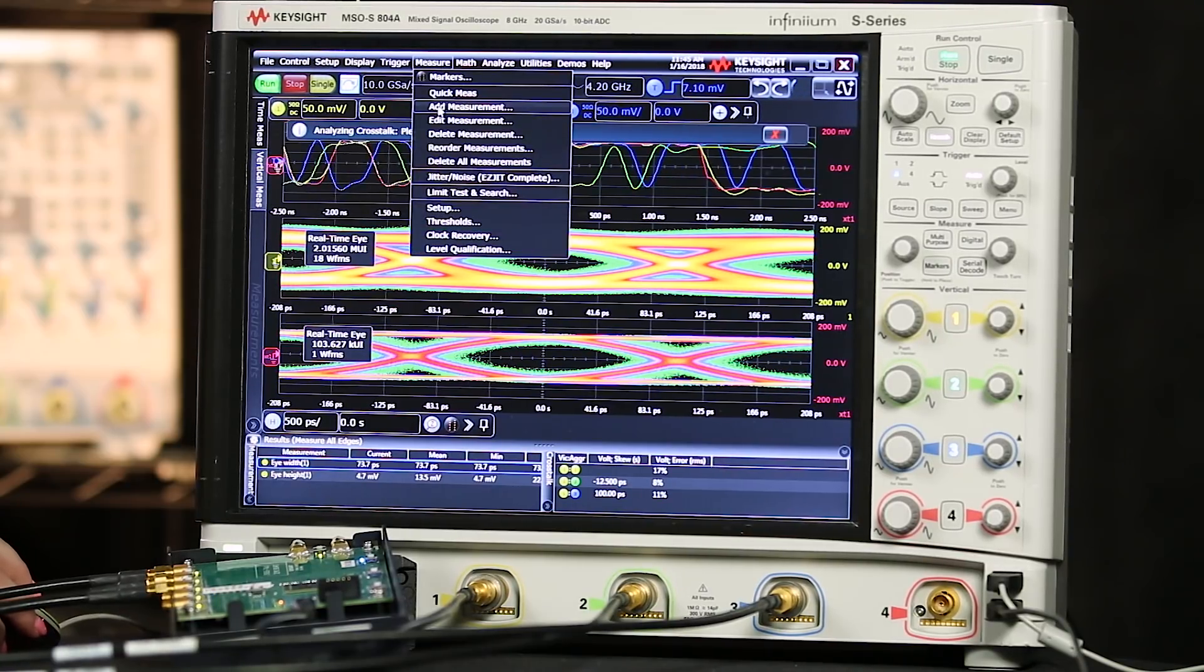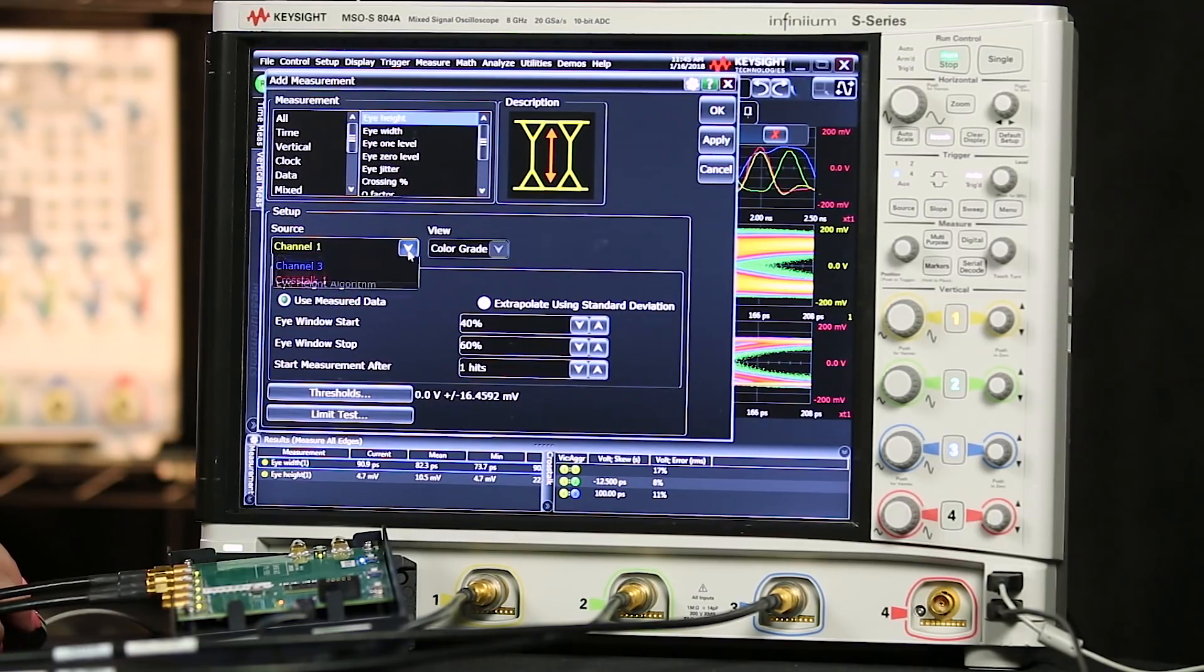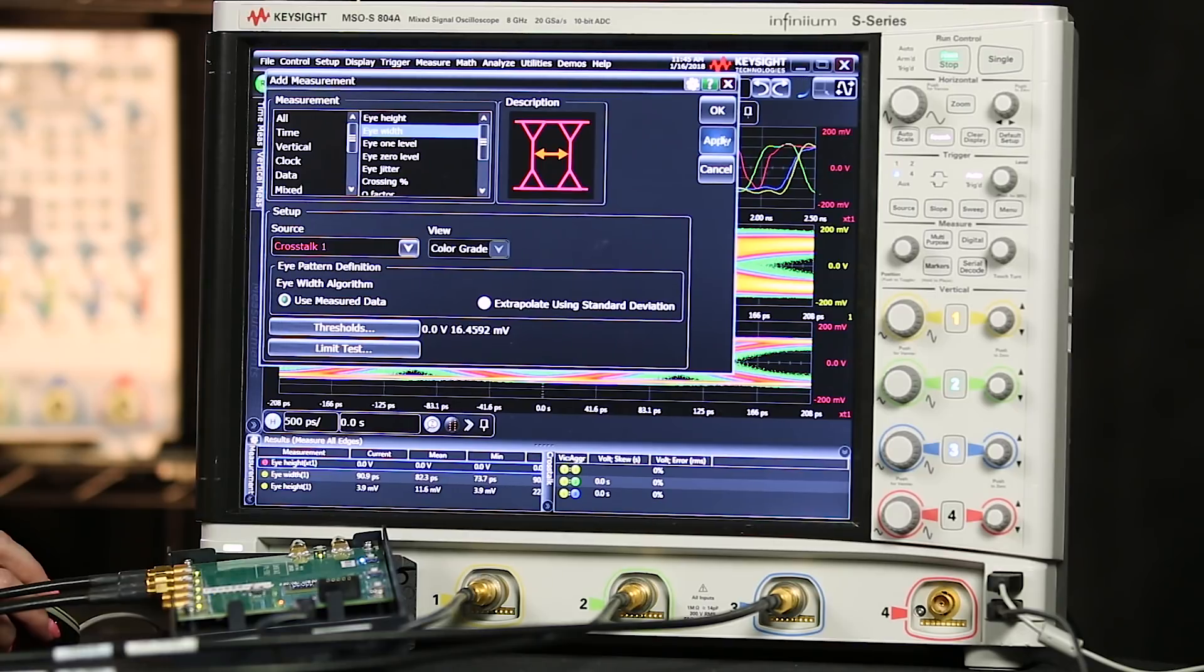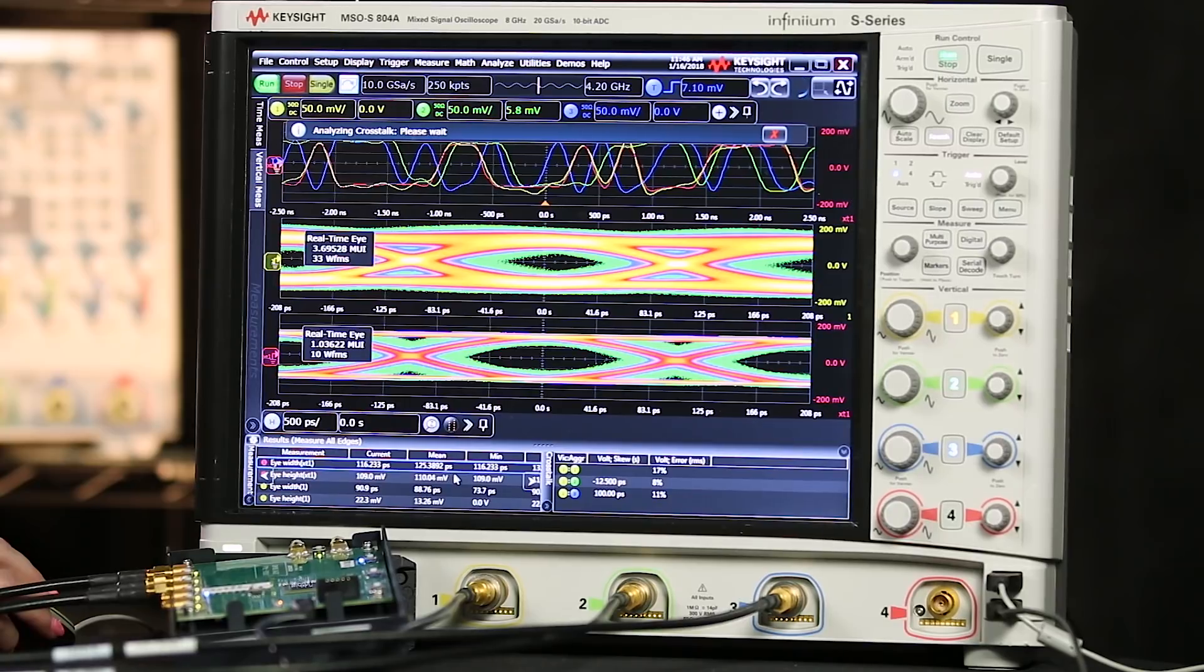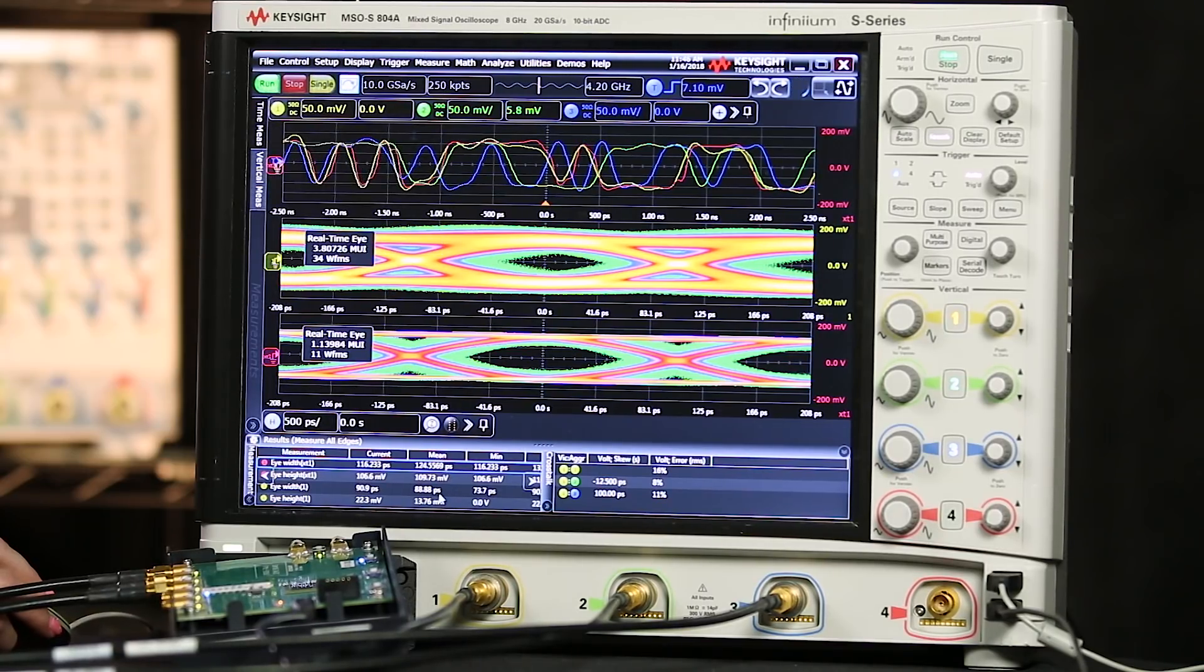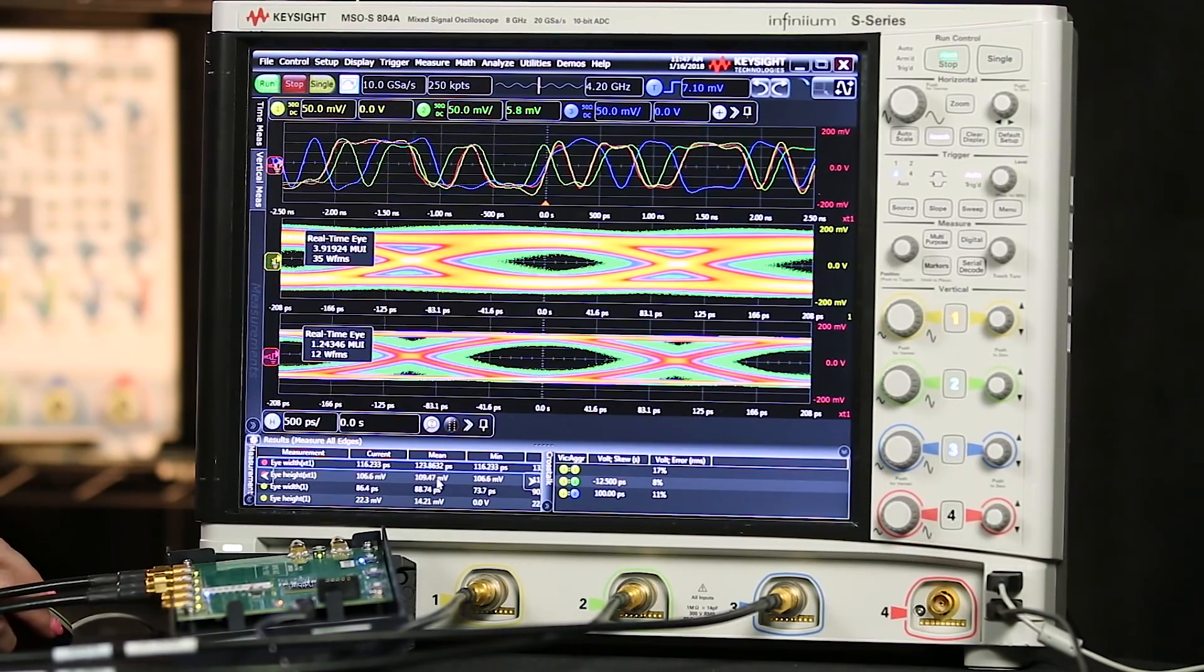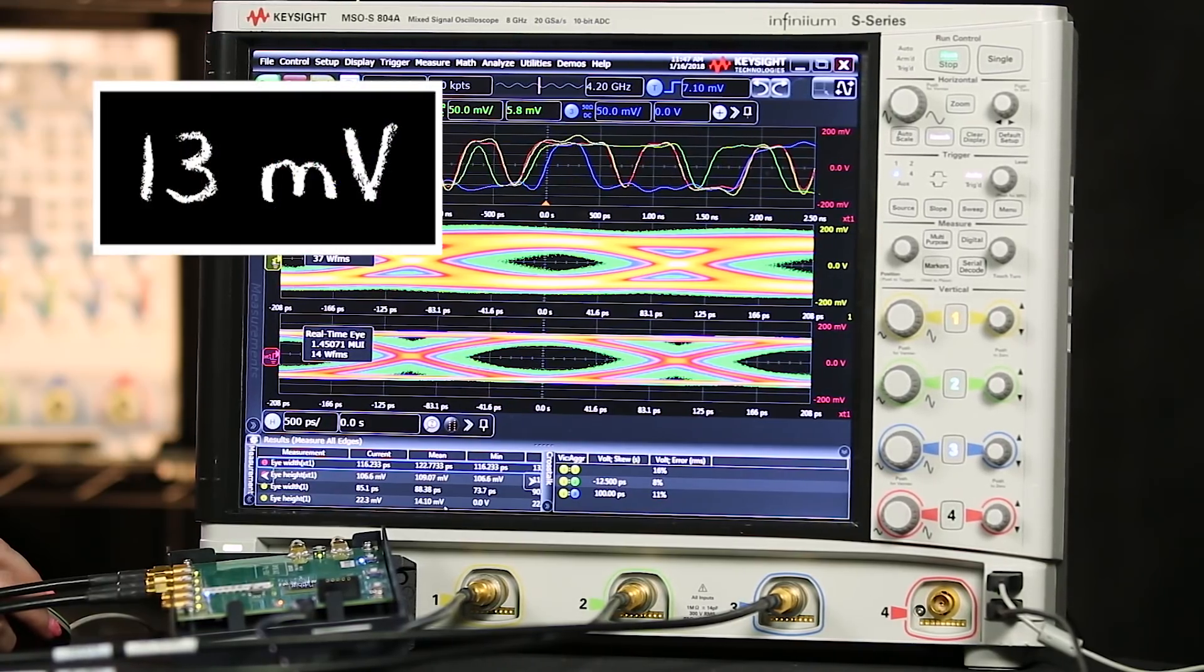So I'll go to measure, add measurement, measurement, and we'll add eye height. First I have to choose my source, so we'll do this on crosstalk one. We'll apply eye height and we'll apply eye width. So if I redesign my board to improve the layout and get rid of the crosstalk, my eye width could potentially be 125 picoseconds compared to the 88 picoseconds we have now. Additionally, the eye height is 109 millivolts, whereas the eye height as it is in this design is only 13 millivolts.